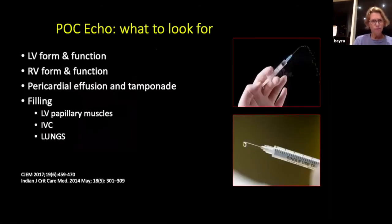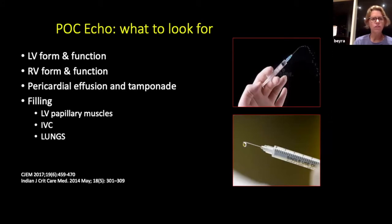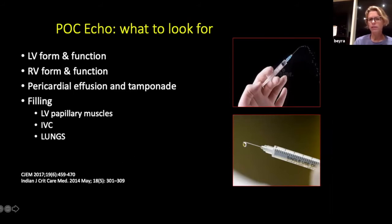What do we look for? We're looking at the different ventricles - the LV and RV. We look at the form: is the wall thin or thick, are there obvious abnormalities, is it dilated, is there obvious fluid around the ventricles, and how are the ventricles pumping - squirting out blood or just dripping? Then we'll look at filling: the papillary muscles, the IVC, and a little bit of the lungs.